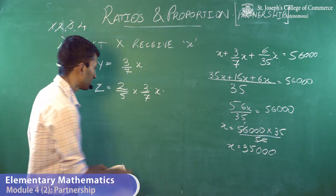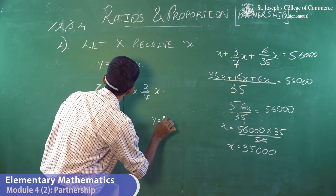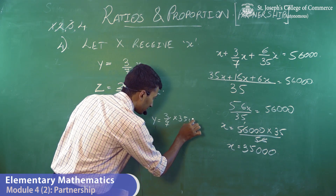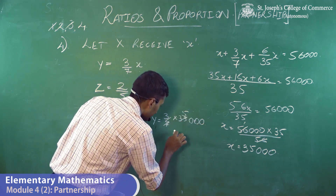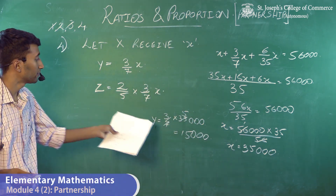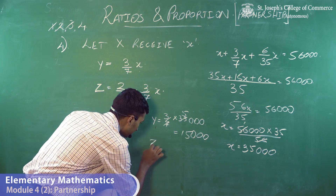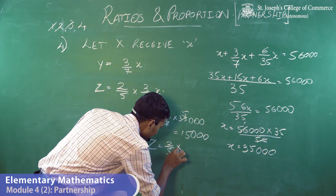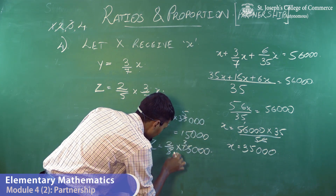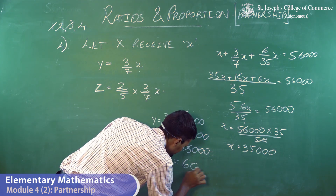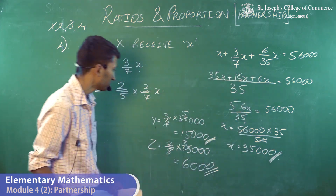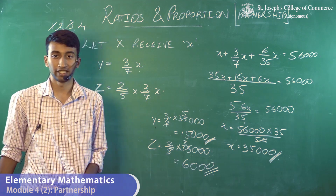If x equals 35,000, then Y receives three-sevenths of x: three-sevenths of 35,000 equals 15,000. Z receives two-fifths of what Y receives: two-fifths of 15,000 equals 6,000. So X receives 35,000, Y receives 15,000, and Z receives 6,000.